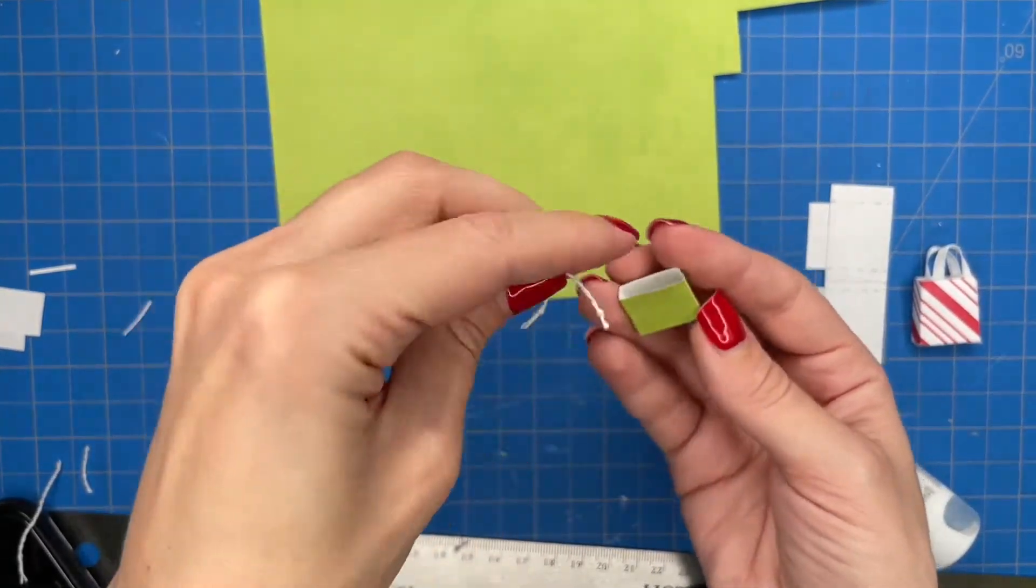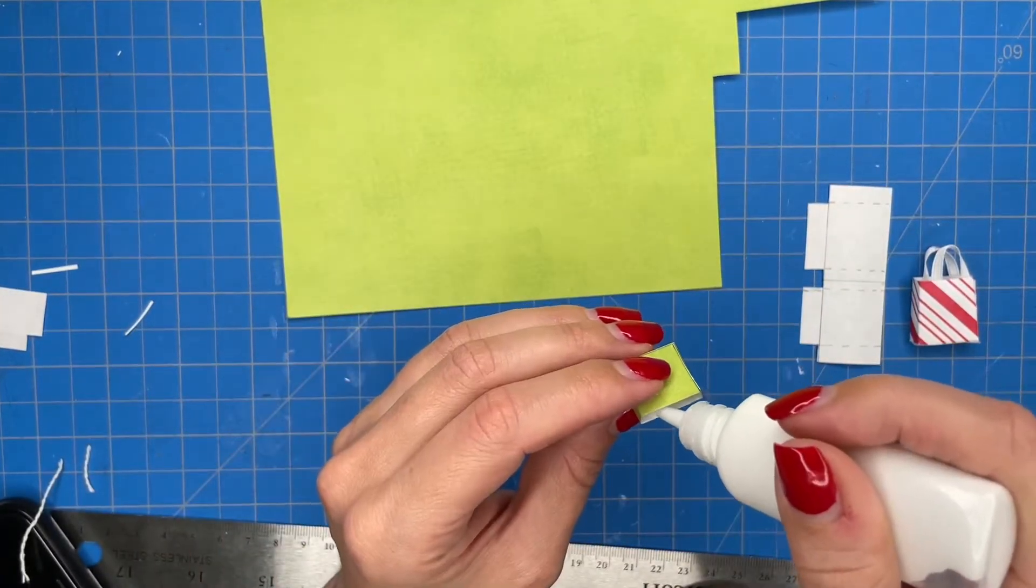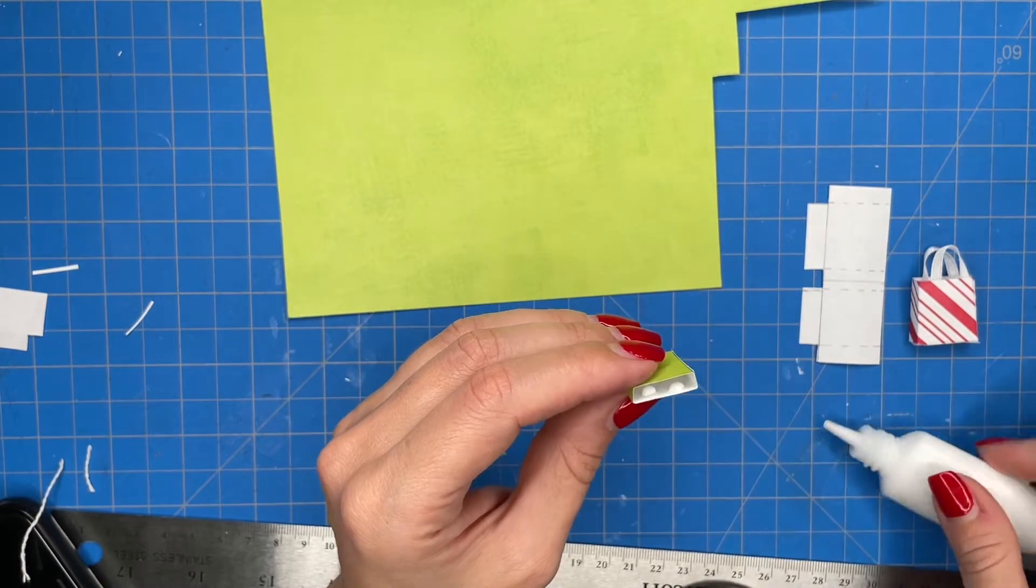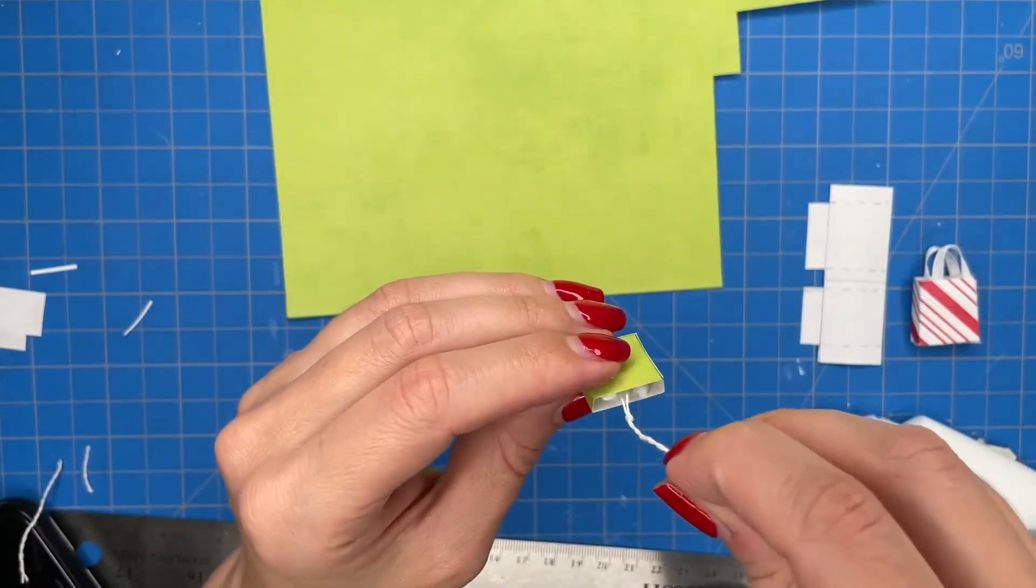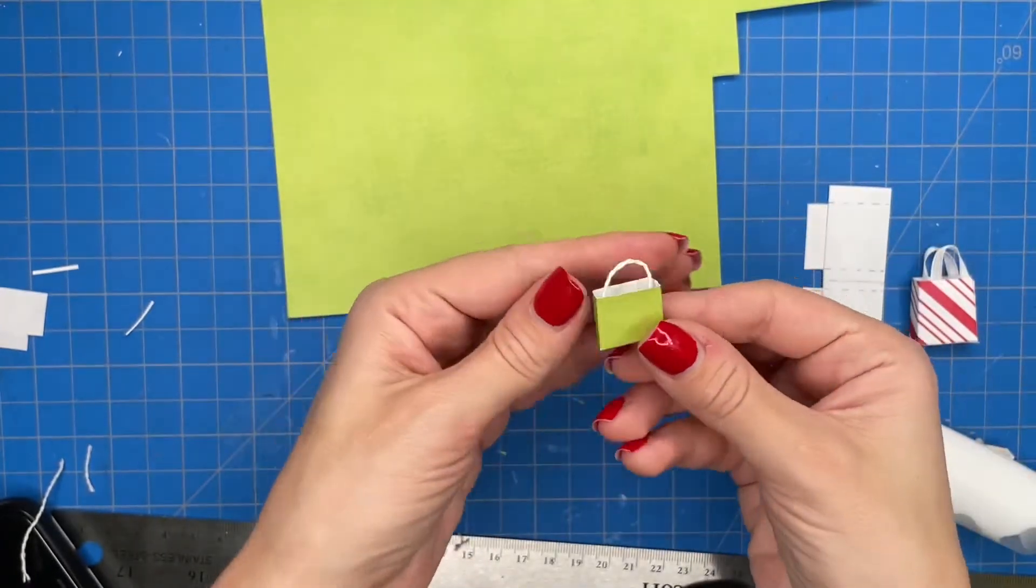For this smaller bag I am just using some string that I have for the handles. You can try different types of material that works for you for the handles. So depending on the type of bag or the look that I want, that is what I'm using for the handle material.